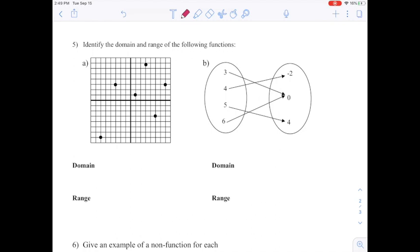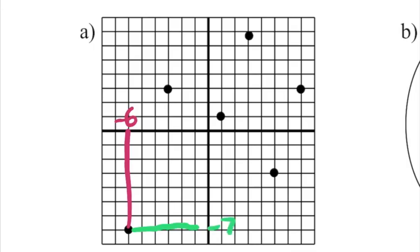So this point here has an x of -6 and it has a y of -7. All I did was I just counted how many spots down from the origin it was: 1, 2, 3, 4, 5, 6, 7.